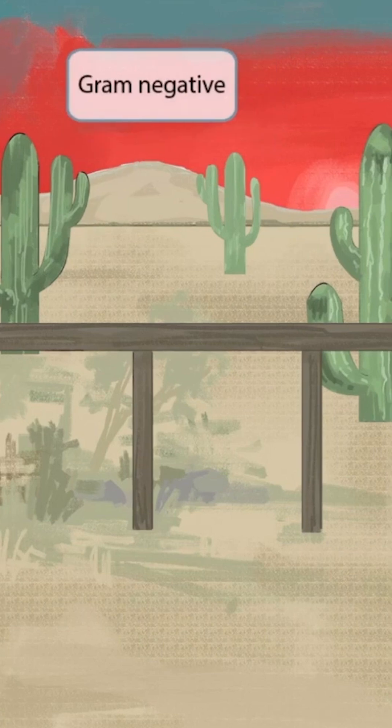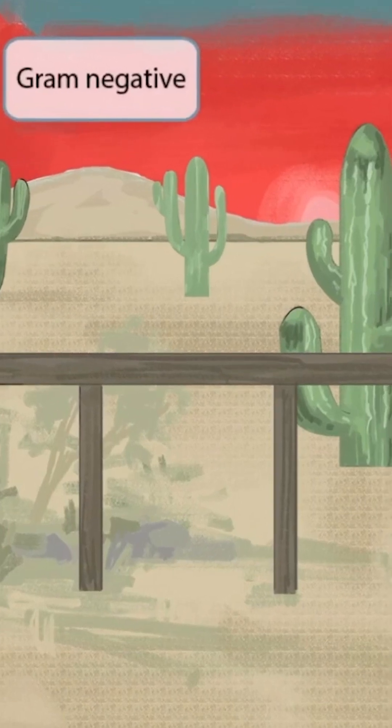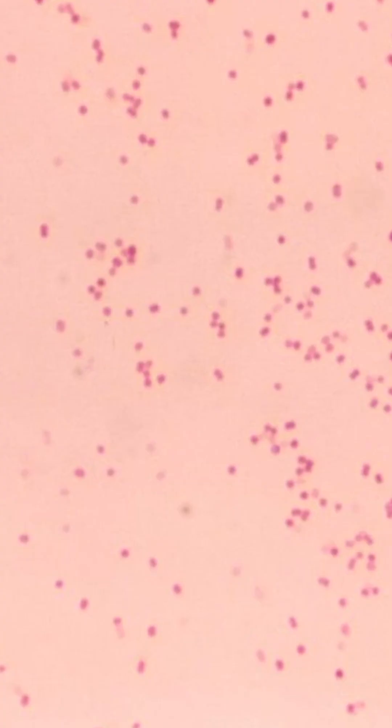I'd like to point out the red sunset. As you hopefully know by now from our other videos, this means that Moraxella catarralis is a gram-negative organism. This is a gram stain of Moraxella — the stain is red or pink, which is why it's a gram-negative organism, and the bacteria are circular shaped. So Moraxella is a gram-negative coccus.